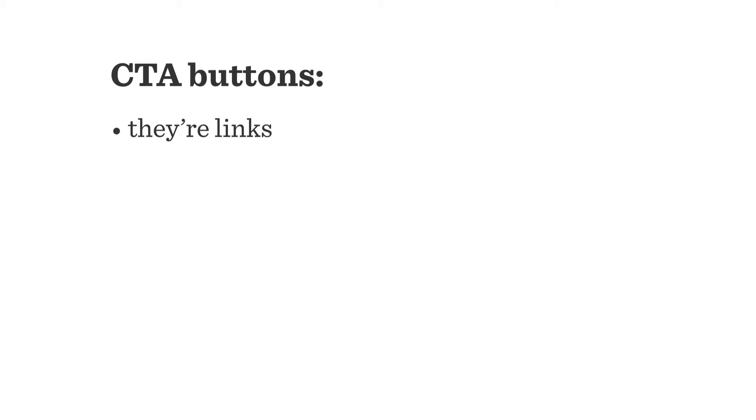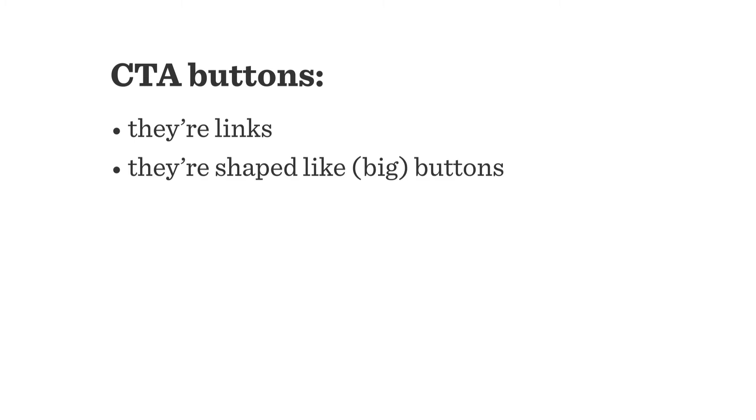Let's quickly define what call to action buttons are. They're basically links pointing to other pages on your site, or to some sort of functionality from your portfolio or e-commerce software. They're shaped like big buttons that stand out in some way — through size, through color, through the wording you use in them.